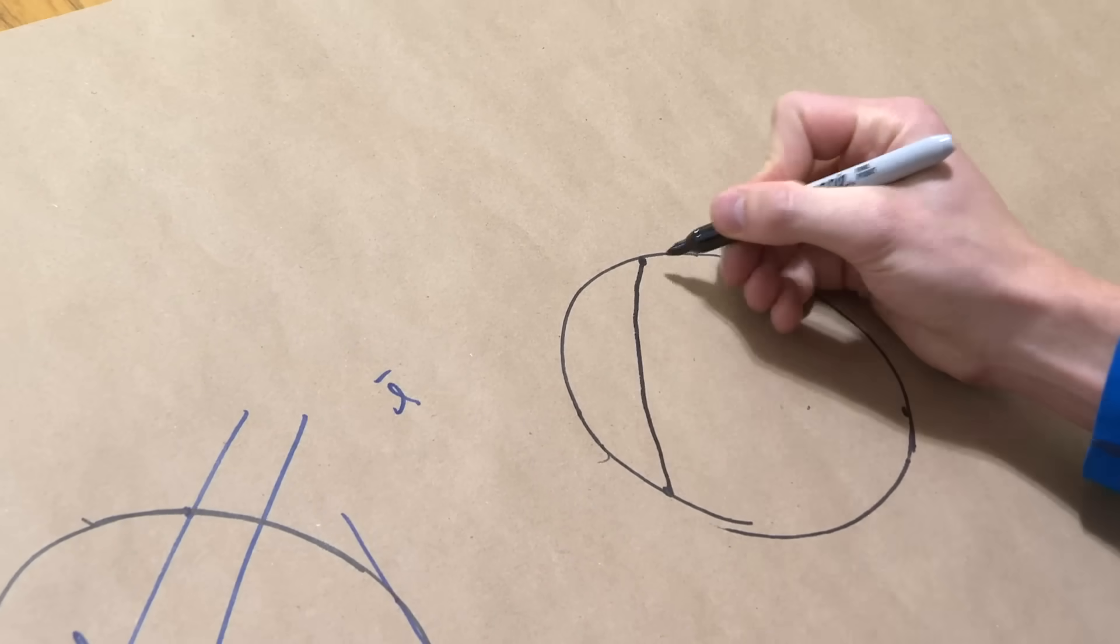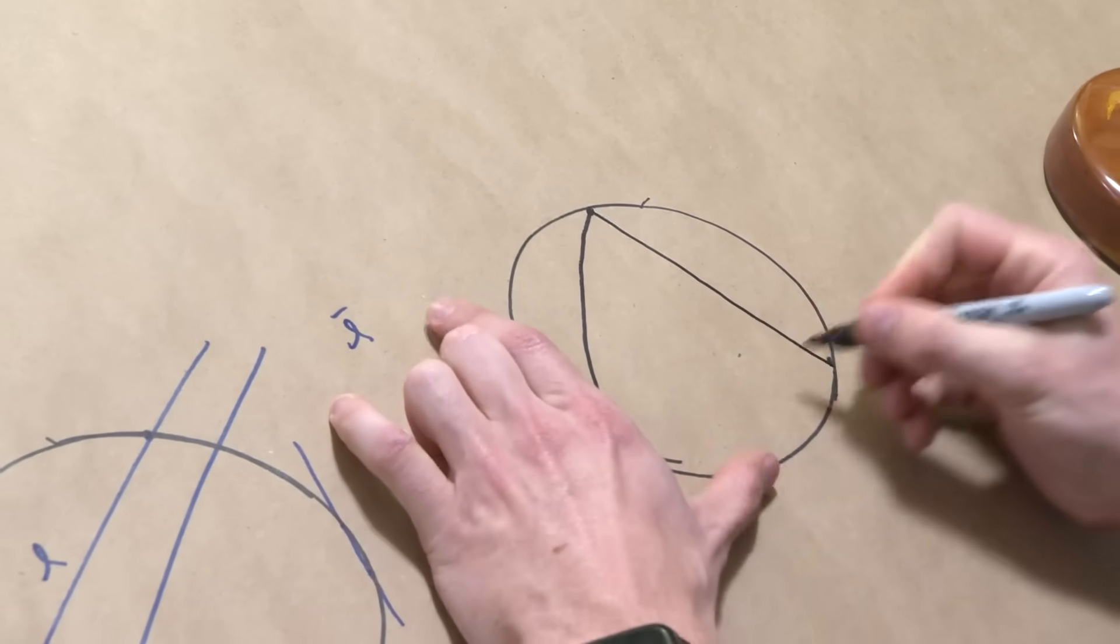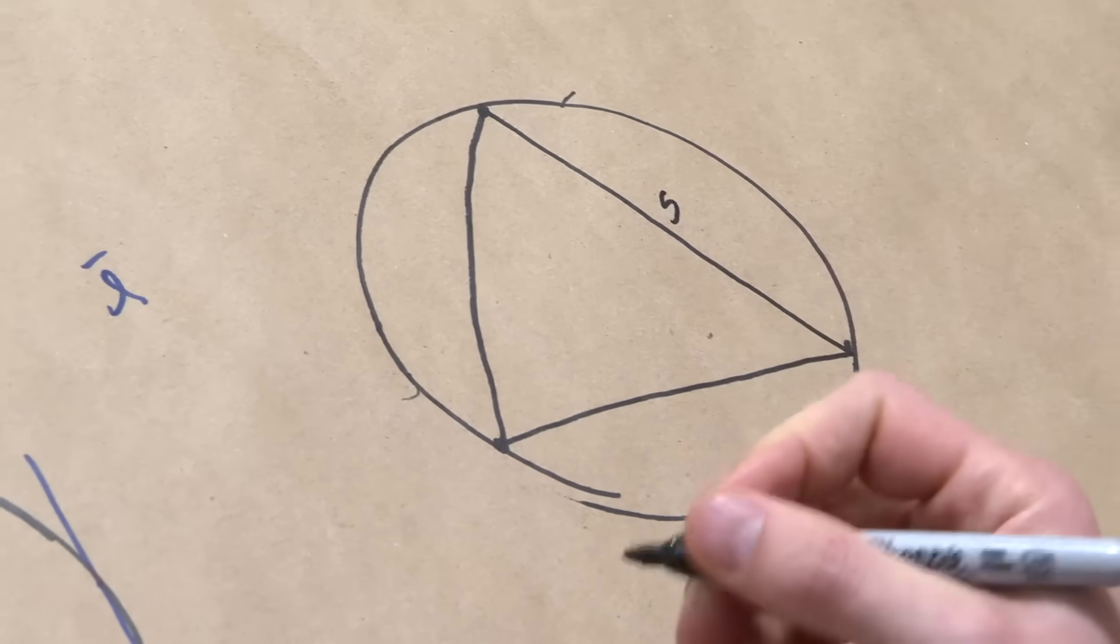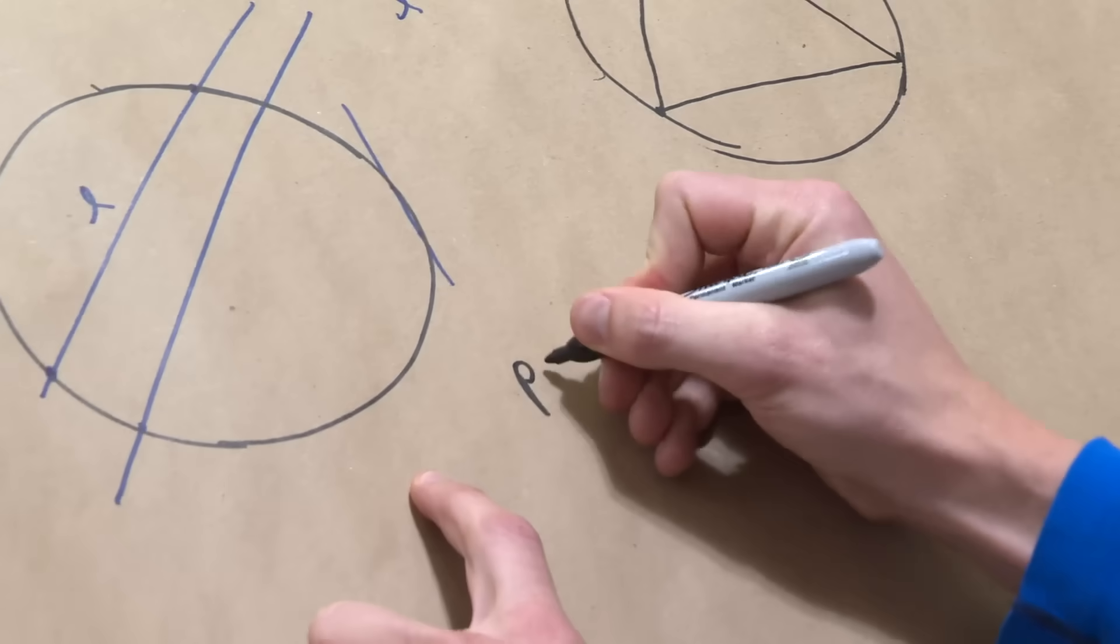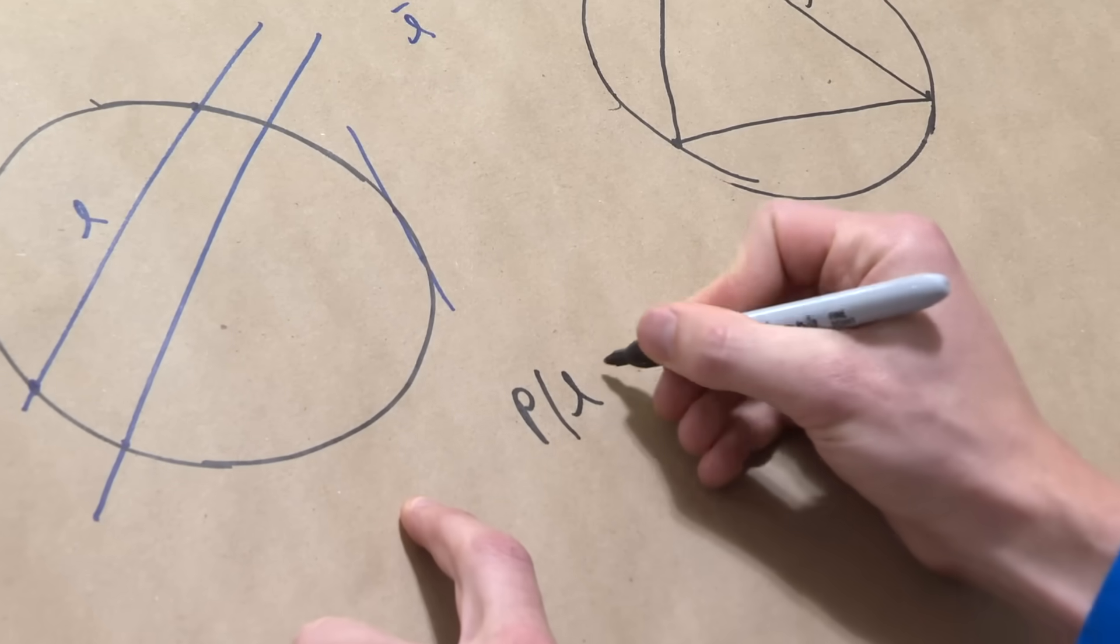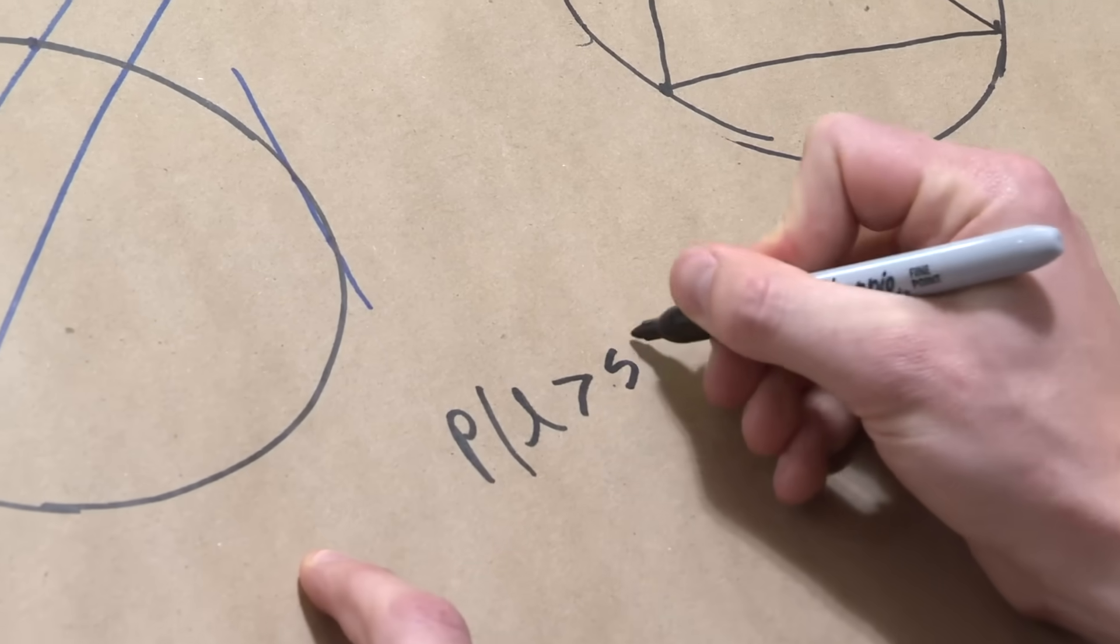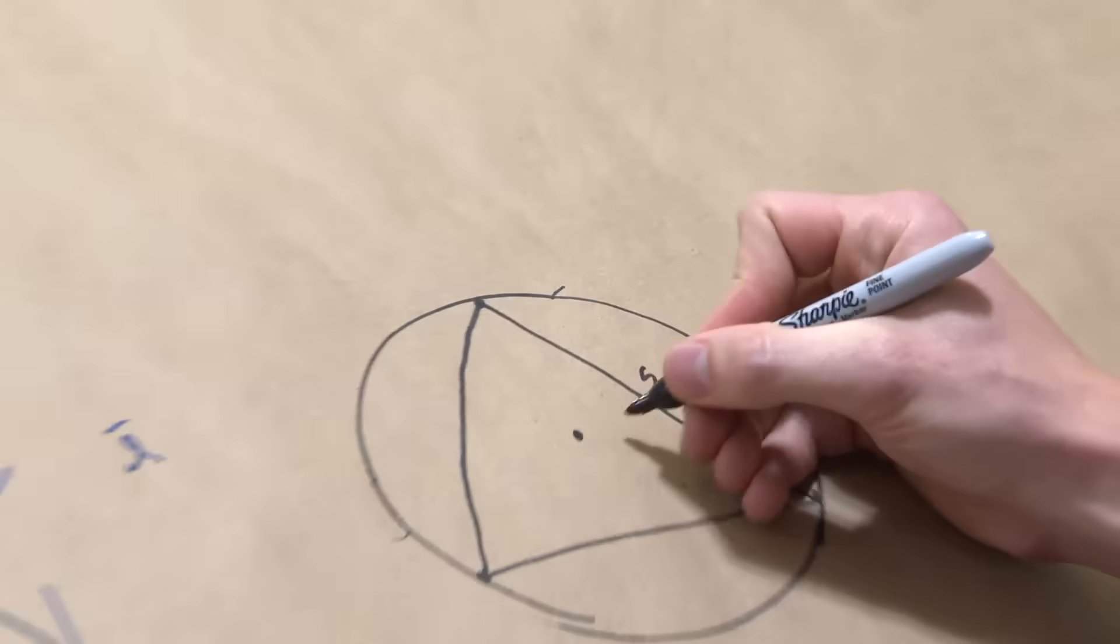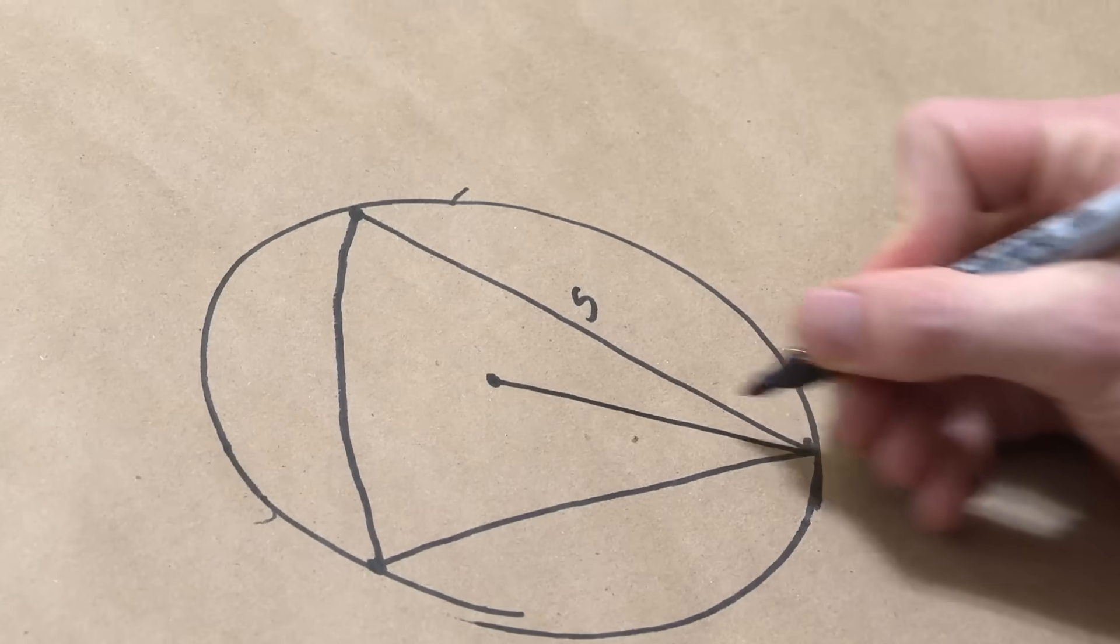So if we take some equilateral triangle, forgive the fact that I'm a little curved in the side length there, and we call this side length something like s. What Bertrand asks is, what is the probability that the length of your random chord is bigger than the side lengths of that triangle? And we could get a little numerical about this. If we say that the circle has a radius of one,